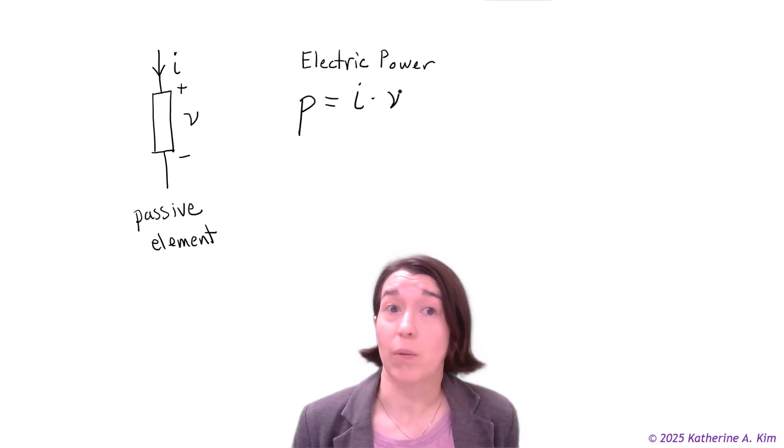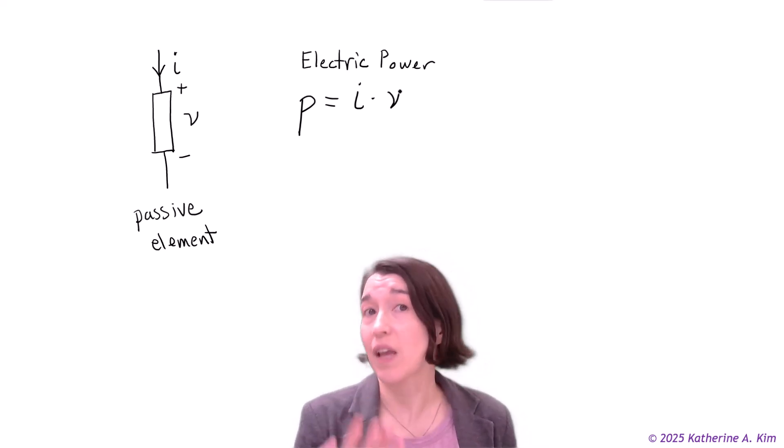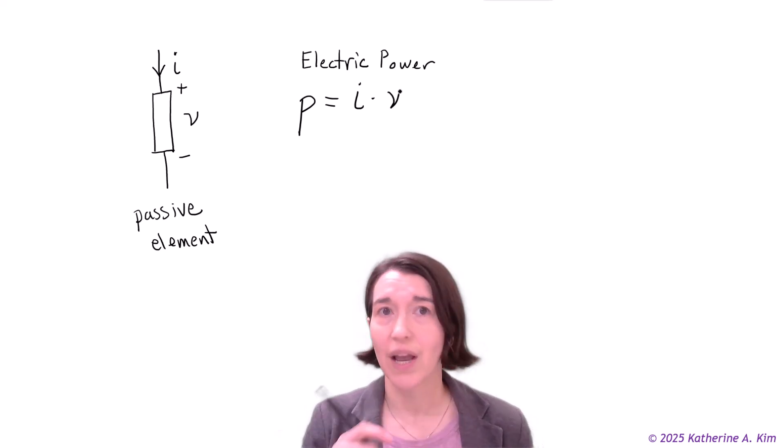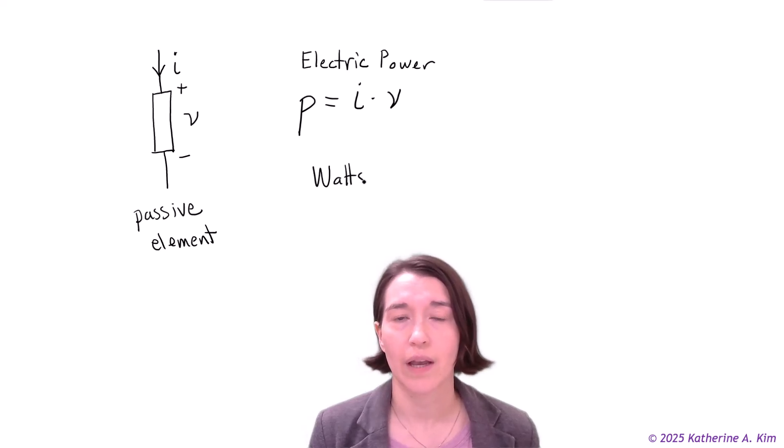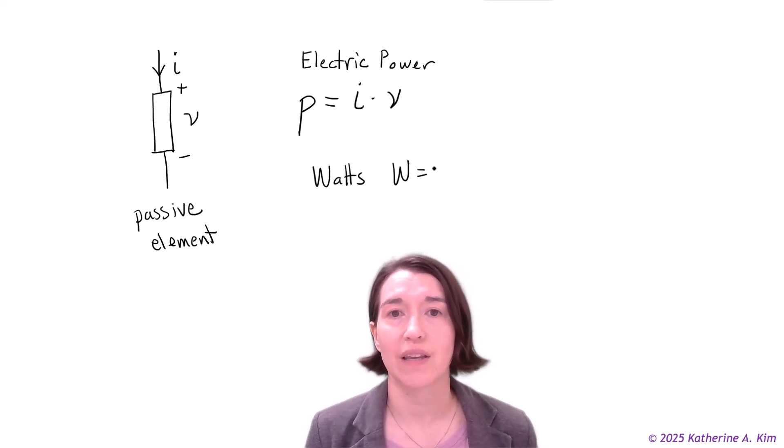So if we want to know the power through an element, say it's a resistor, if we know the voltage and the current we multiply those together and we will get power. The unit for power is going to be watts, and we just put a W and that equals joules per second. So make sure to write your units.